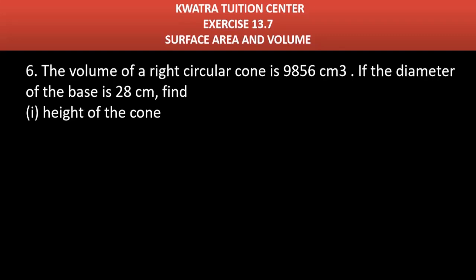Question number 6 says, the volume of a right circular cone is 9,856 cm³. If the diameter of the base is 28 cm, find the height of the cone.